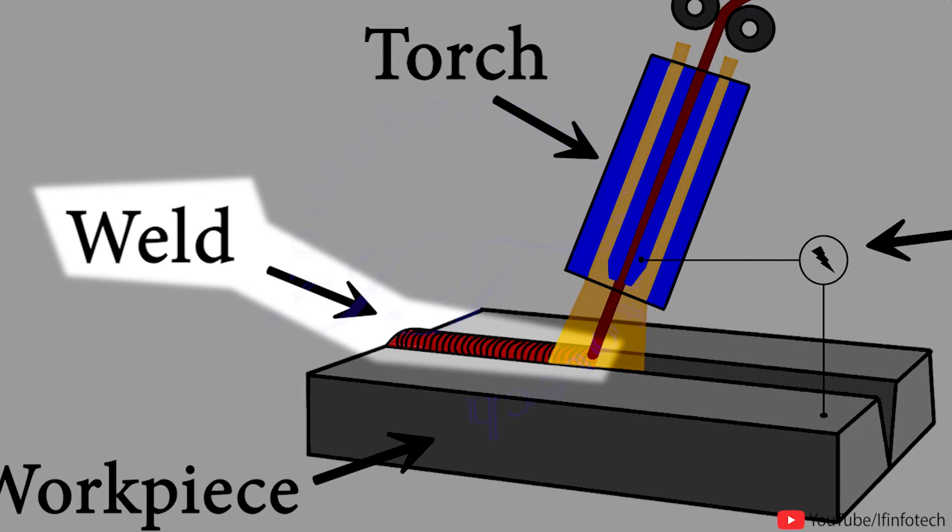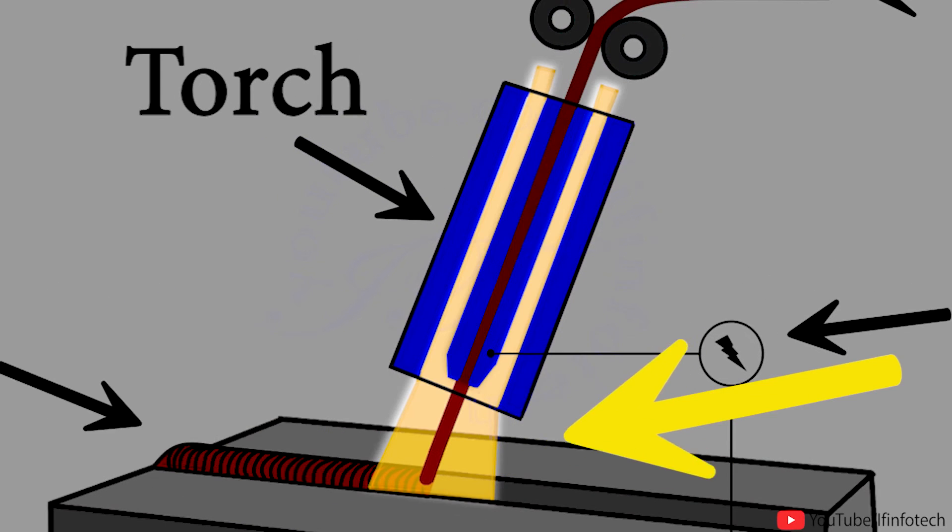The weld pool is protected from the surrounding atmosphere by shielding gas fed through a nozzle. Shielding gas selection depends on the material being welded.